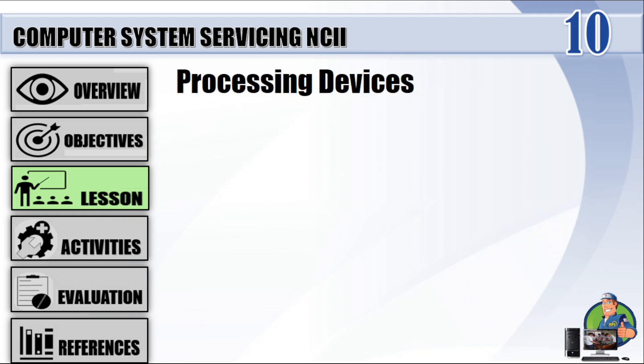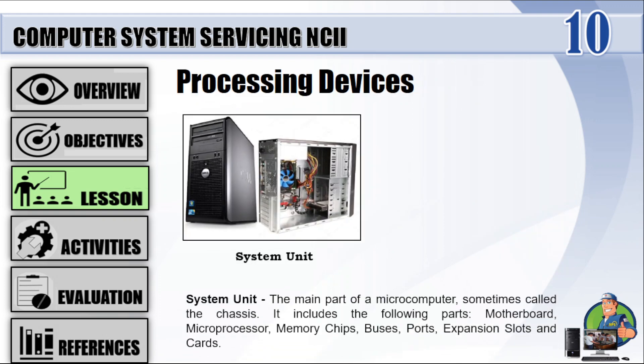Example of processing devices — System Unit: The main part of a microcomputer, sometimes called the chassis. It includes the following parts: motherboard, microprocessor, memory chips, buses, ports, expansion slots, and cards.